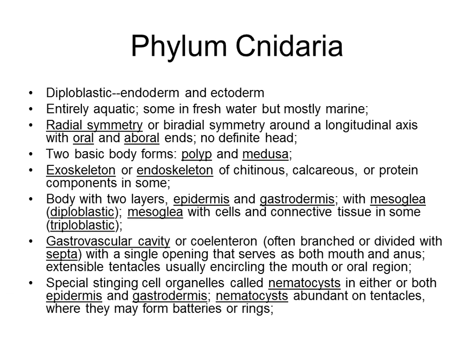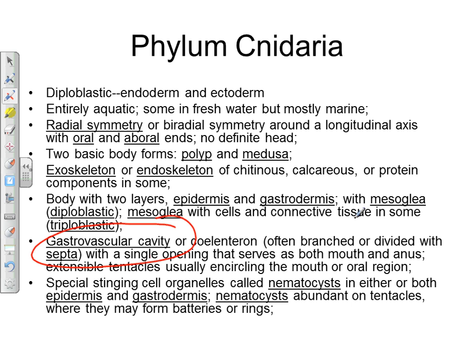The single opening serves as both mouth and anus and is usually surrounded by tentacles. These tentacles have special stinging cells called cnidocytes; a specific type of cnidocyte is the nematocyst. These stinging cells help cnidarians catch food and protect themselves.